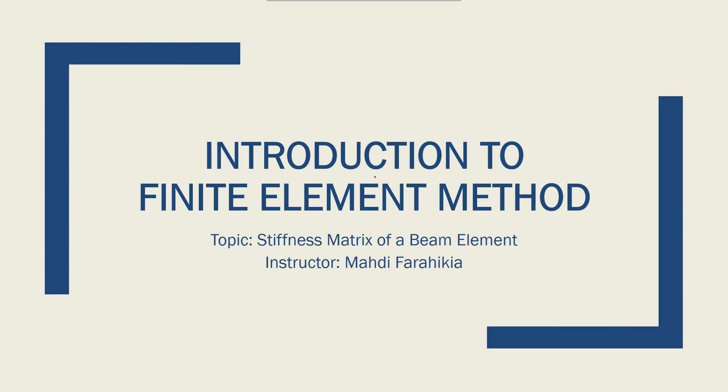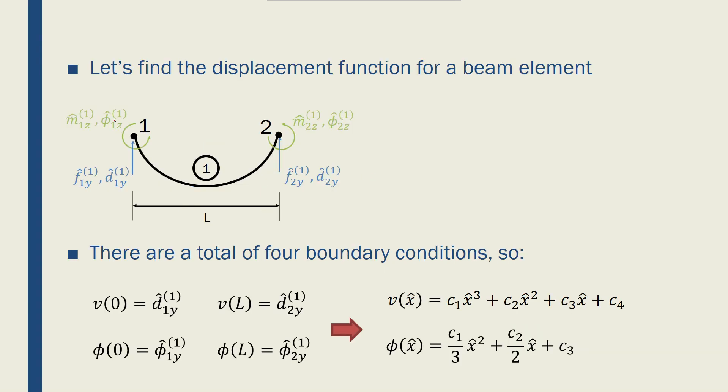Our next step to find the stiffness matrix of a beam is to find the equivalent displacement function for a beam element. So if you have a beam element like this, element 1 for example, with nodes 1 and 2, at each end of this element, at each node, node 1 and node 2, we will have its moments and its rotations.